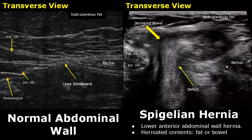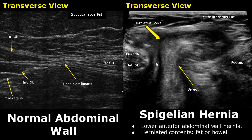Here is another image of a spigelian hernia. We can see bowel in the hernia sac. This is the neck of the hernia sac; the defect is present here. The herniation is between the abdominal wall muscles.